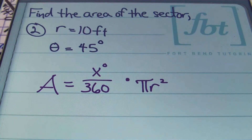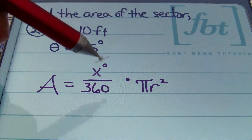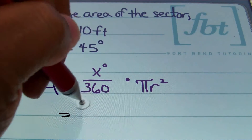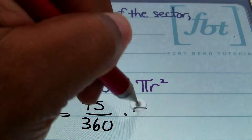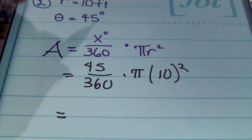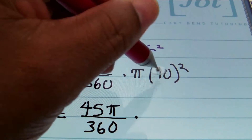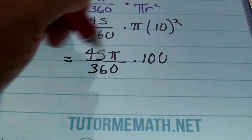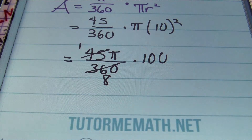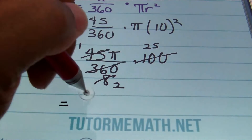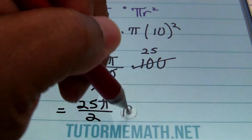In problem number two, find the area of the sector. Our radius is 10 feet and theta is in degrees, so we'll use the second formula: central angle in degrees divided by 360, times pi r squared. Plugging in: 45 over 360, times pi, times 10 squared. Simplifying with order of operations: 45π over 360, times 100. Then 45 goes into itself once, 45 goes into 360 eight times, and we reduce 8 and 100 by 4 — giving 2 and 25. The result is 25π over 2 feet squared.